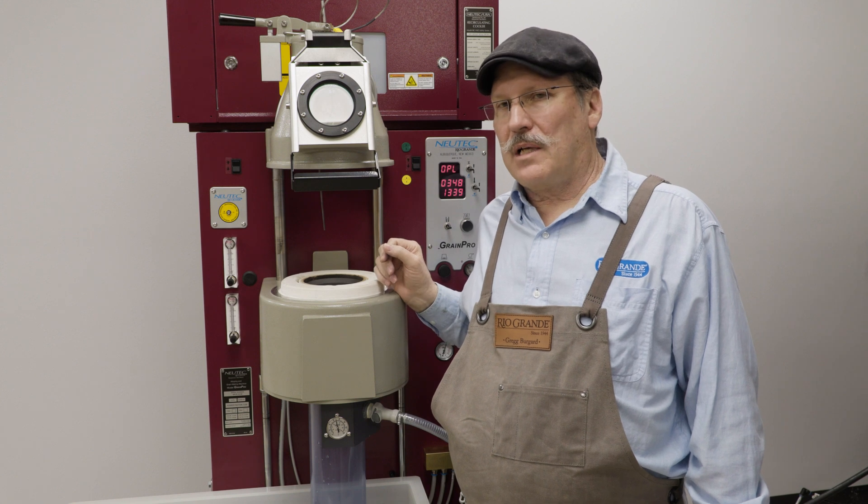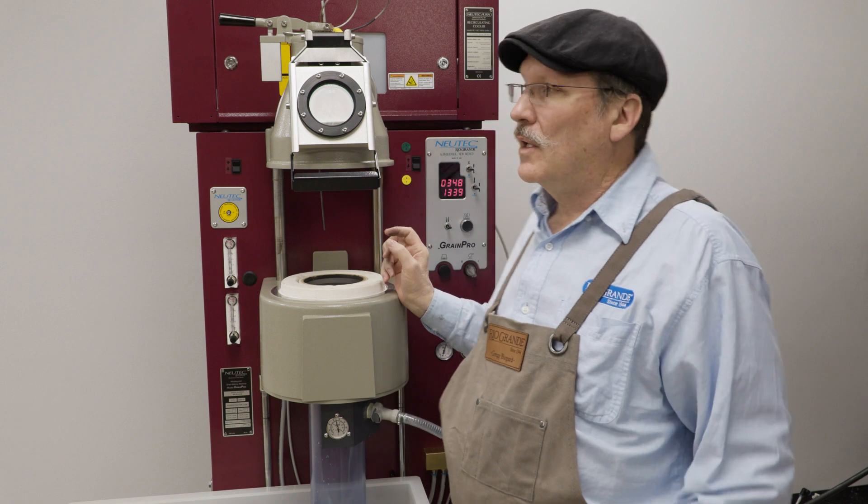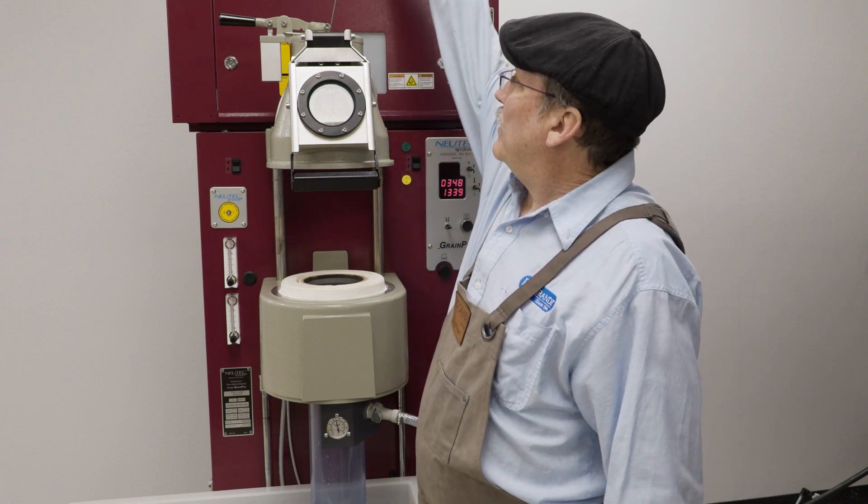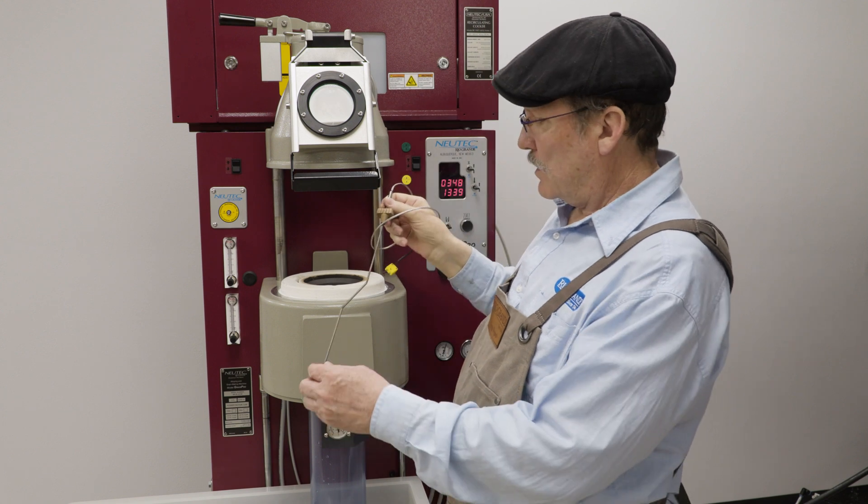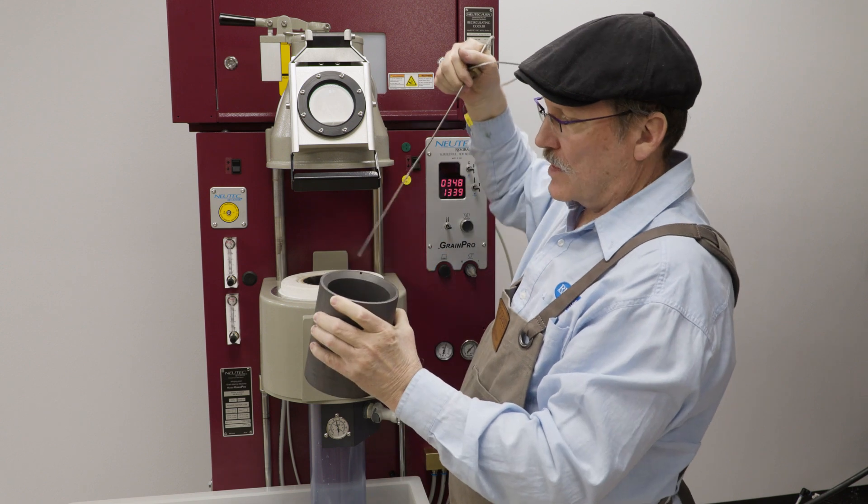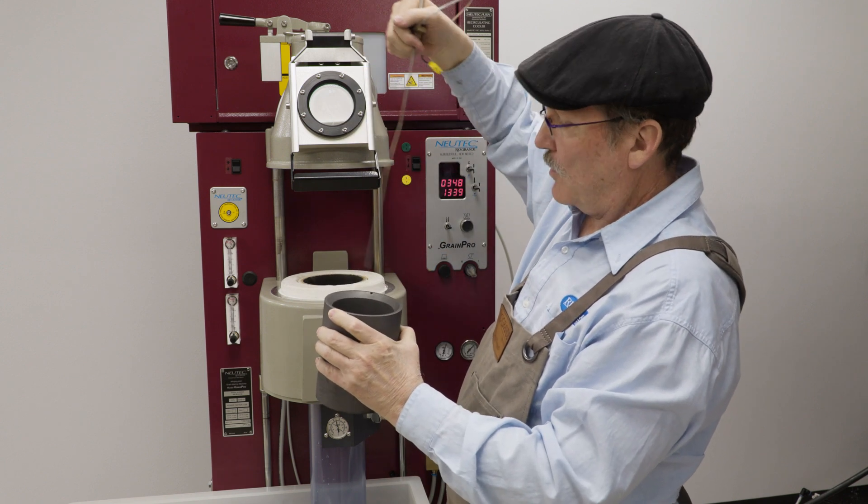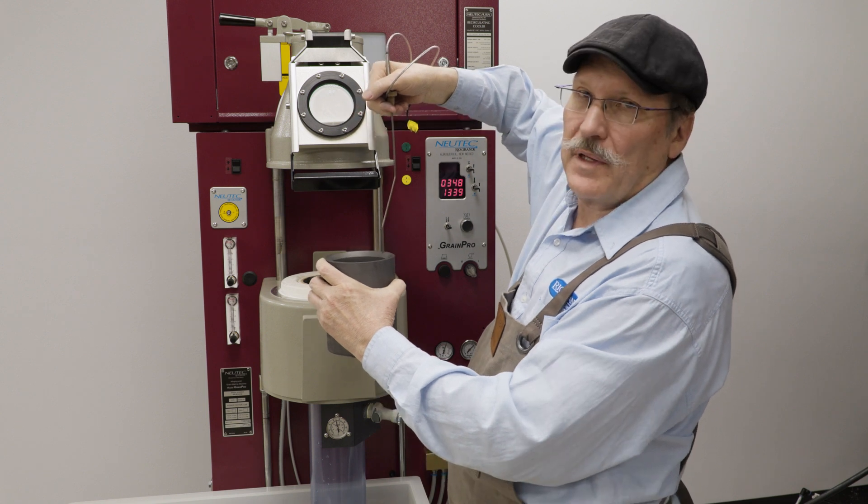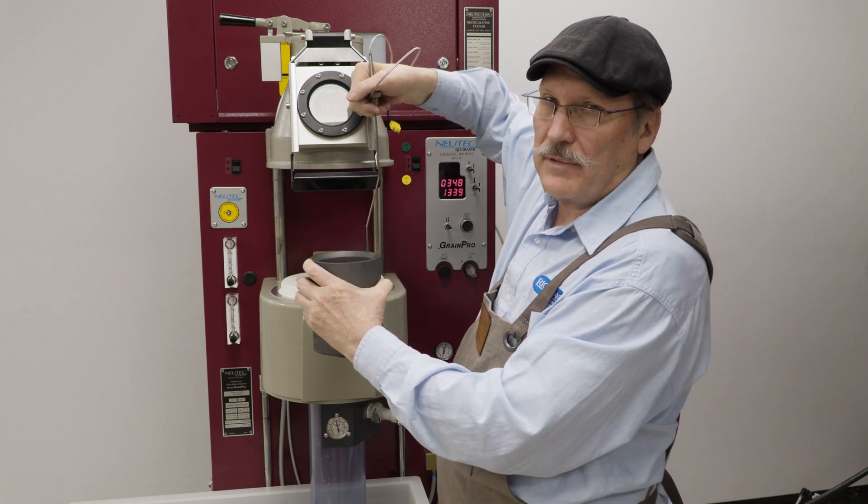Right now we're going to talk about continuous graining. Some of the things that we have to set up specifically for that are this special thermocouple which has this little dog leg in it. Then we have the crucible. You'll notice this hole. This is why the thermocouple has this bend, because it goes in there and doesn't interfere with the sealing rod like for single batch.